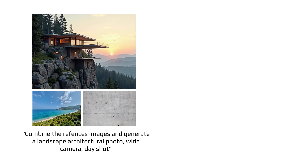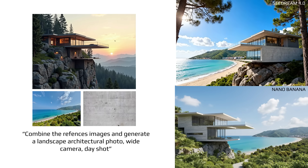Image composition is one of my favorite workflows for architecture and design — using multiple images for compositions and montages. You can upload a variety of images and prompt to combine them into one cohesive image. The prompt I used was: 'Combine the reference images and generate a landscape architectural photo, wide camera and day shot.' Both produced a rather beautiful job with very different compositions. Seadream has a wider perspective with artistic framing using trees, while Nano Banana kept a similar composition to the reference, placing the building on the left rock edge. If you want the generation to follow references more closely, recommend Nano Banana; for more creativity and striking perspectives, try Seadream.